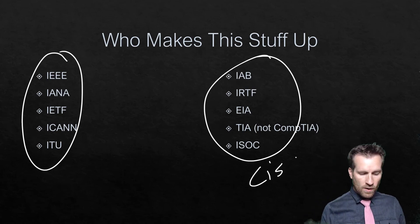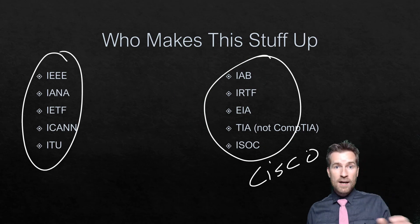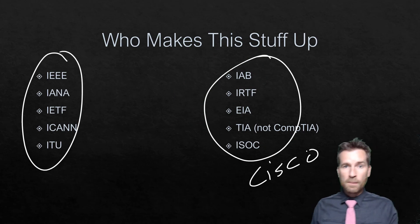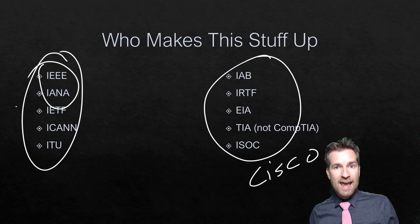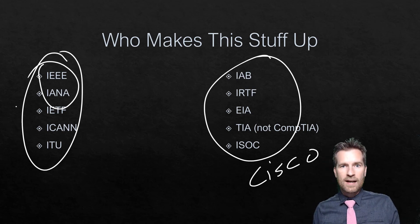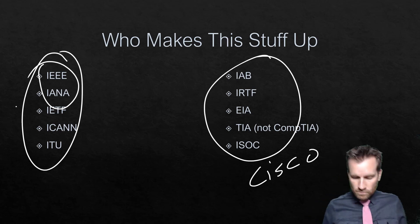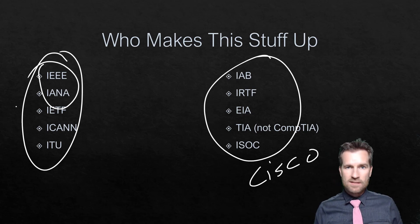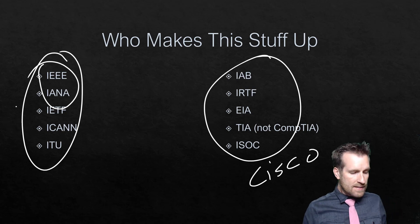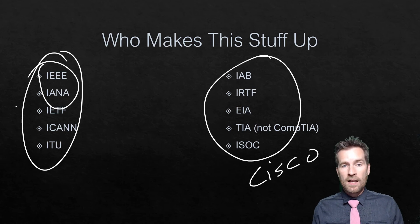Cisco is just one example of a proprietary organization that creates their own proprietary protocols. Often what they'll do is take some protocols from other standards organizations and improve upon them, then use those on their devices to improve functionality. Sometimes other brands will be able to plug into that and use it, while other times it's just Cisco equipment that can use it because it's proprietary. So next, we're going to get into more about protocols and what some of the common rules are that govern these different protocols.